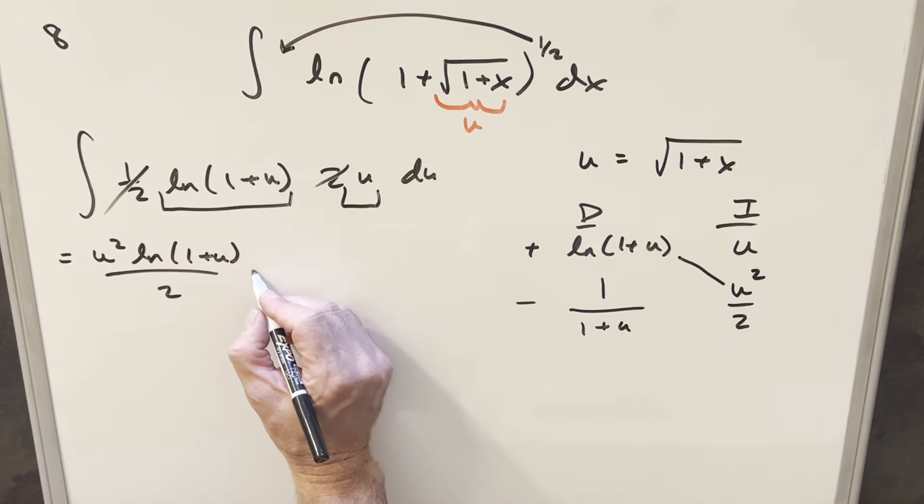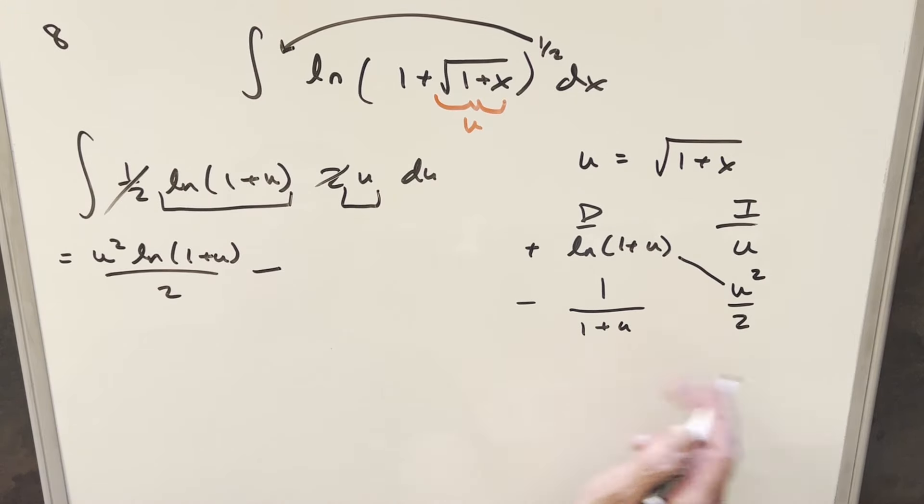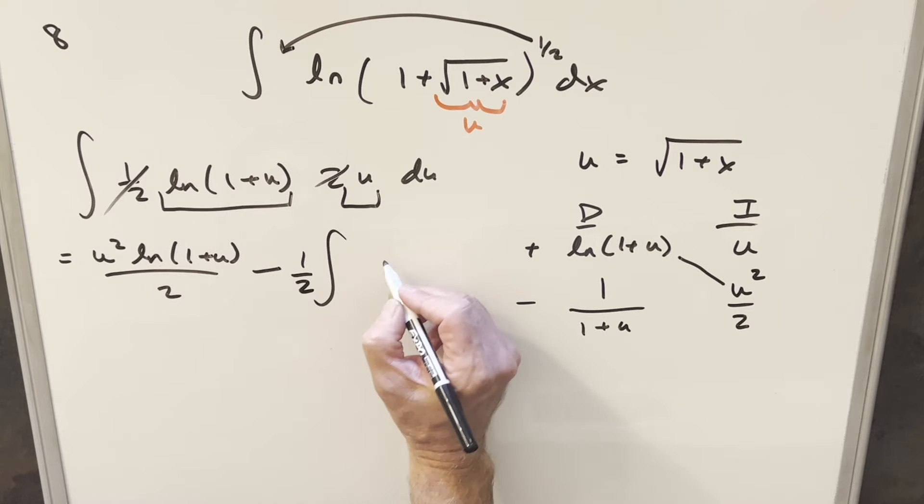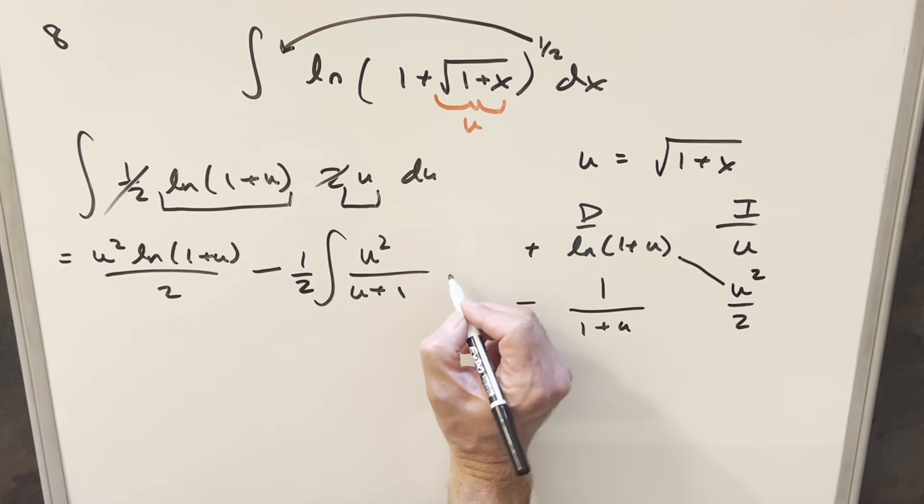Then here, this is going to become an integral. Let's bring a half up front, so we'll write like this, minus 1 half, and then we're going to have u squared. I'll change the order and write this as u plus 1 du.